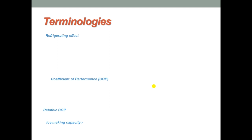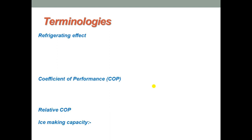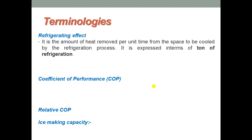Moving on to some important terms used in the refrigeration cycle: refrigerating effect, coefficient of performance, relative COP, and ice making capacity. The first one is refrigerating effect — it is the amount of heat removed per unit time from the space to be cooled by the refrigeration process.